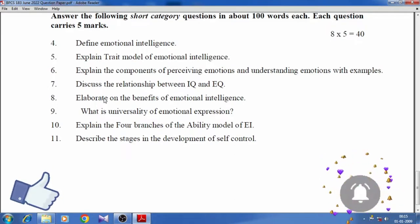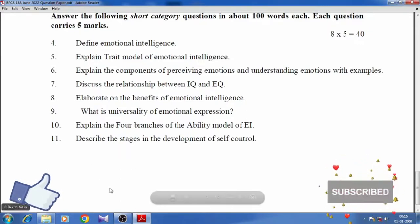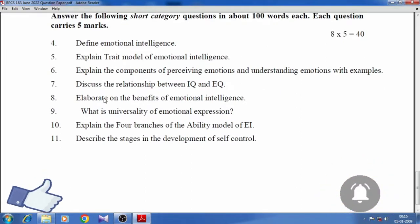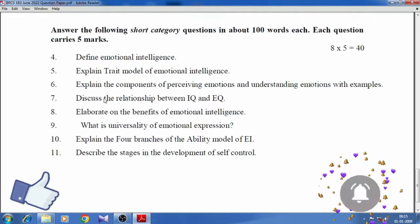Question 9: What is universality of emotional expression? Question 10: Explain four branches of ability model of EI. Question 11: Describe the stages in the development of self-control.